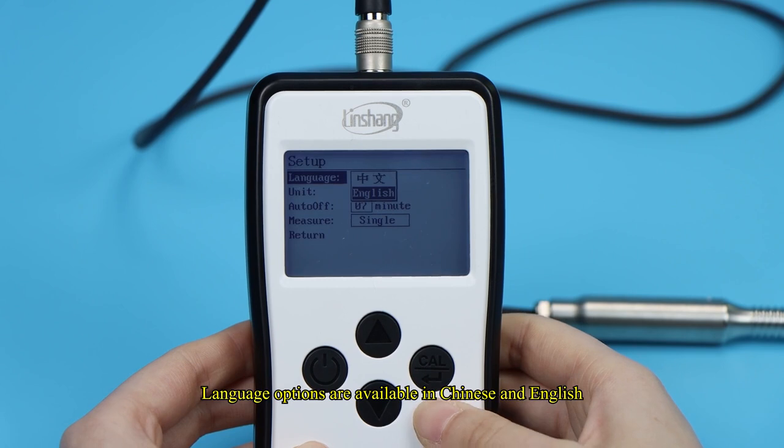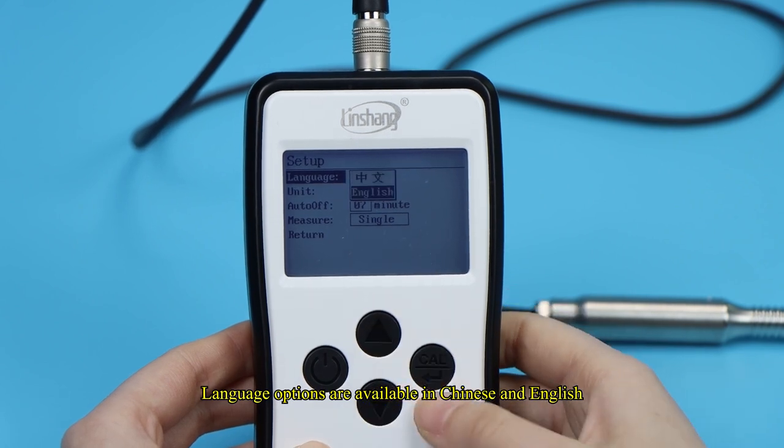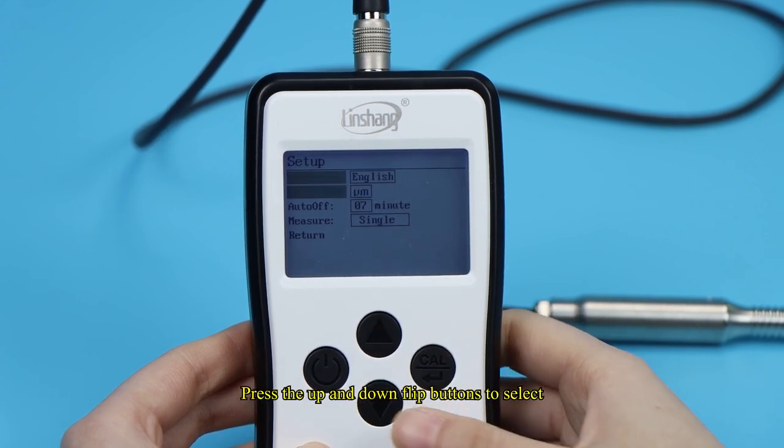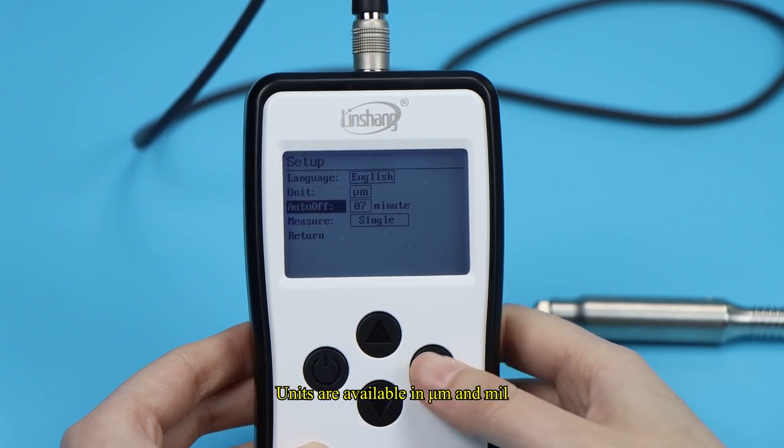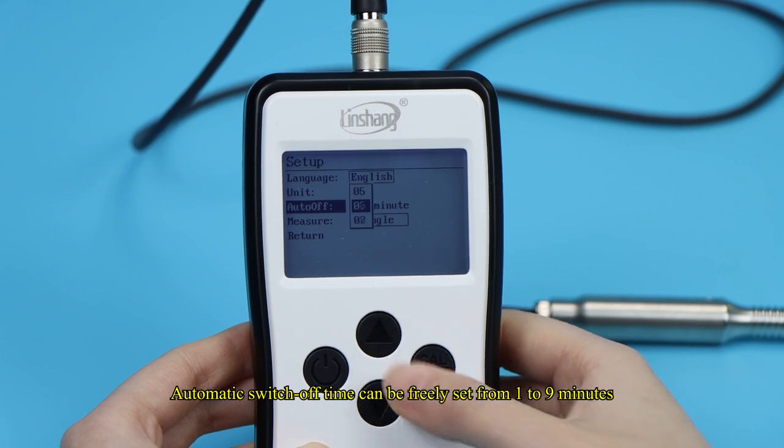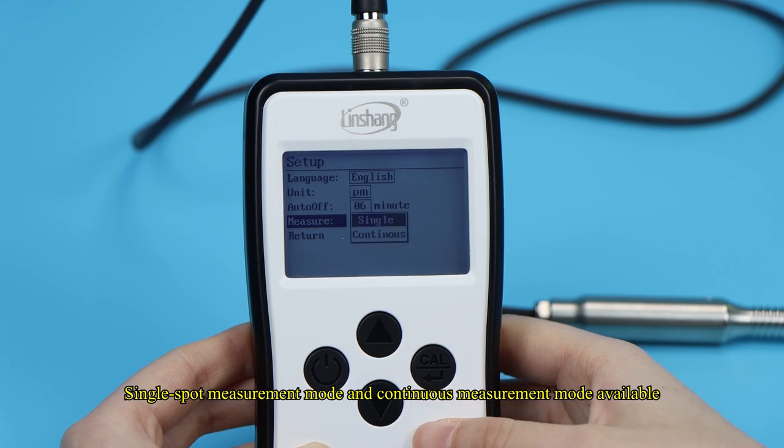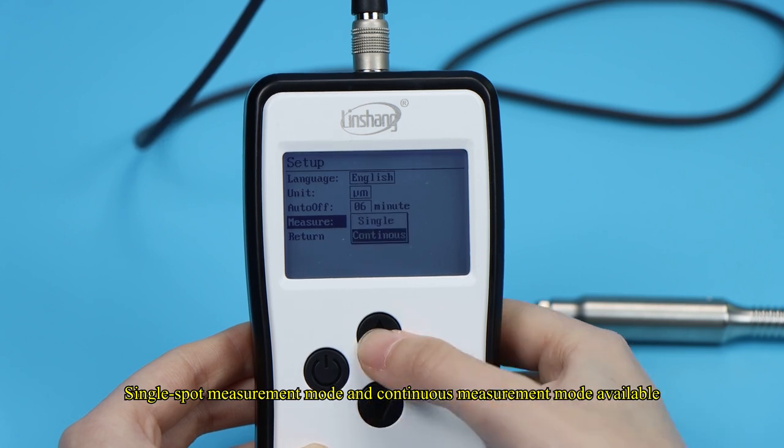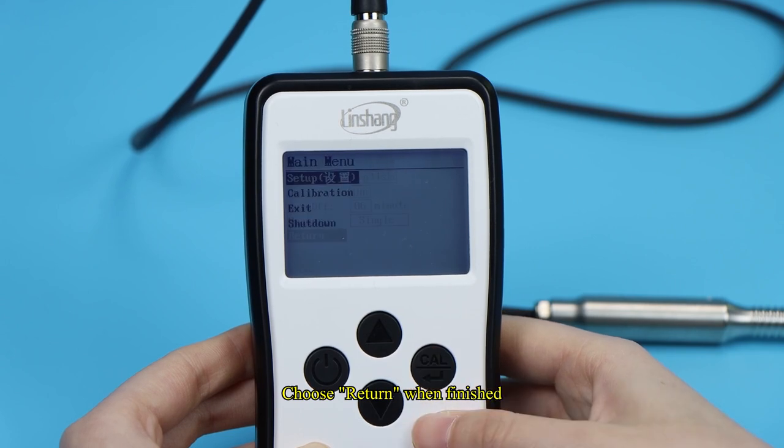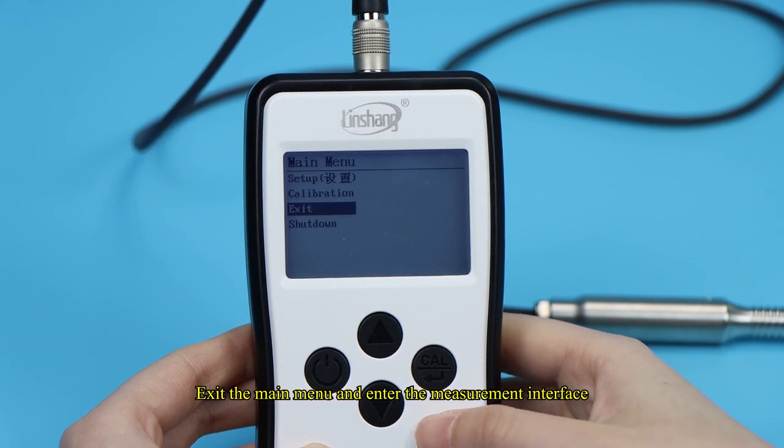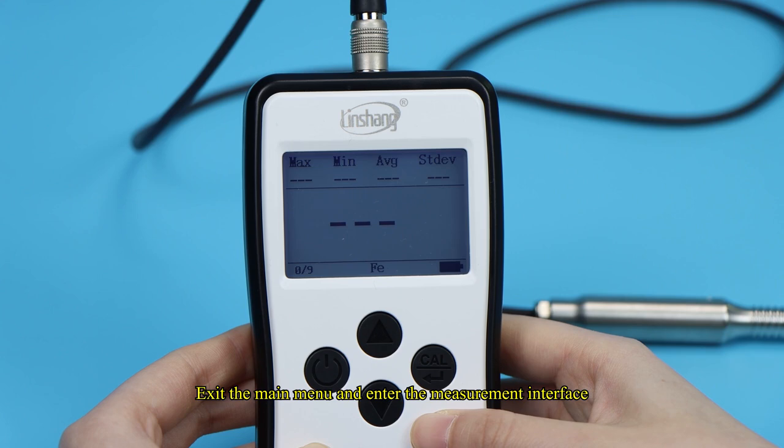Language options are available in Chinese and English. Press the up and down flip buttons to select. Back button for confirmation. Units are available in micrometer and mil. Automatic switch off time can be freely set from 1 to 9 minutes. Single spot measurement mode and continuous measurement mode available. Choose return when finished. Exit the main menu and enter the measurement interface.